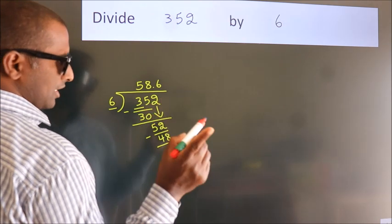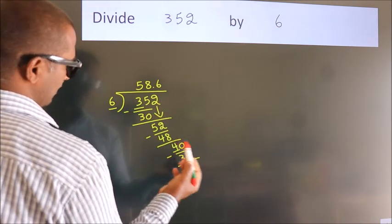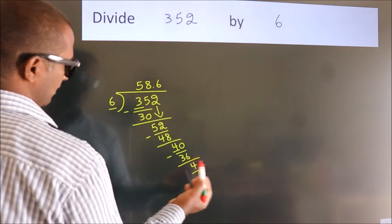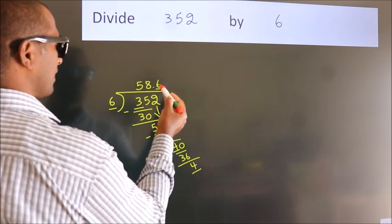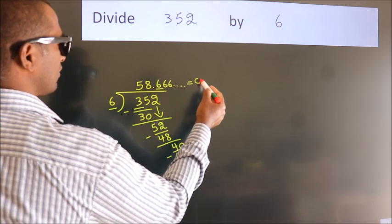Now you observe. We had 4 here and we got 4 again. That means this number keeps on repeating. So this is our quotient.